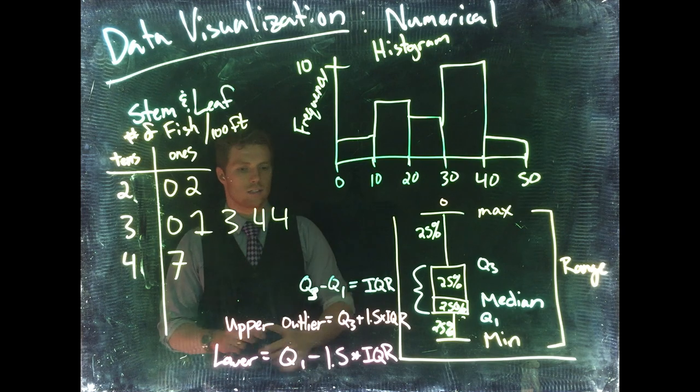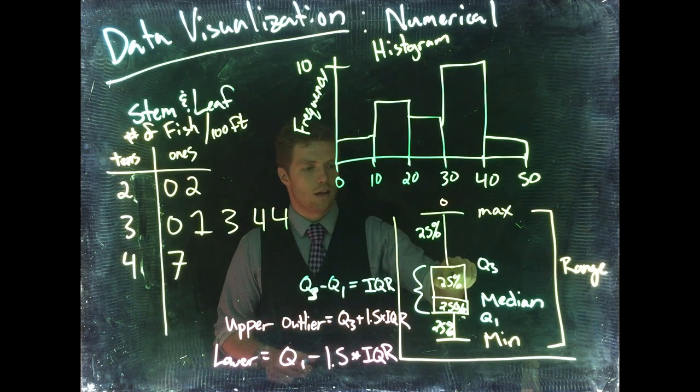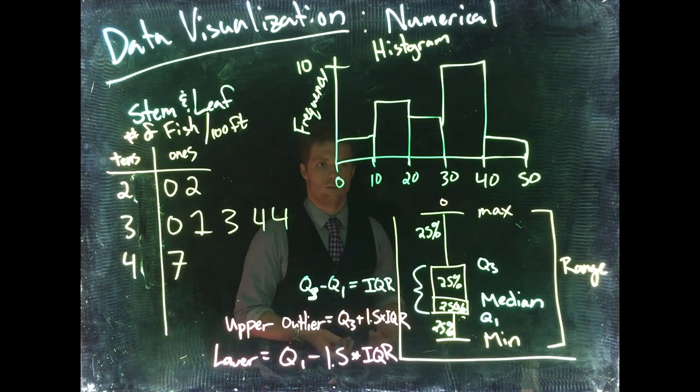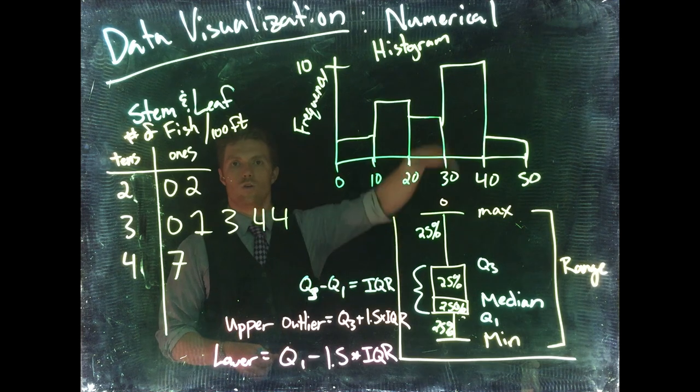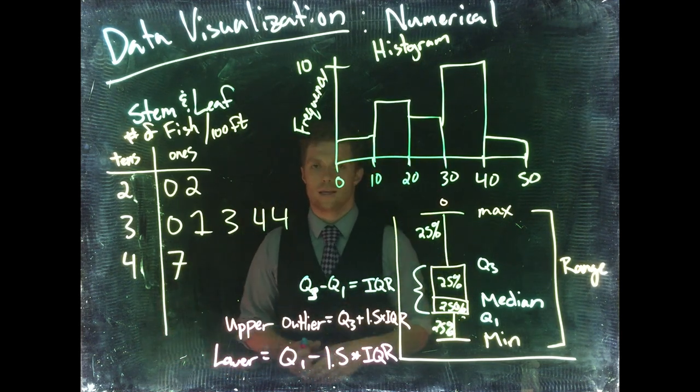This lets us know how far away from the upper limit of the IQR or the lower limit of the IQR we have to be before we consider a point an outlier. Those are things that have happened so far away, are so rare, that they really don't describe what is happening with our data.